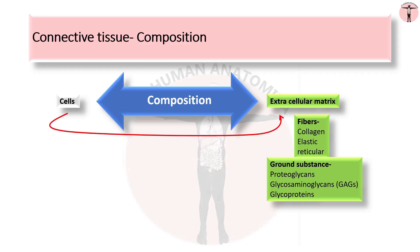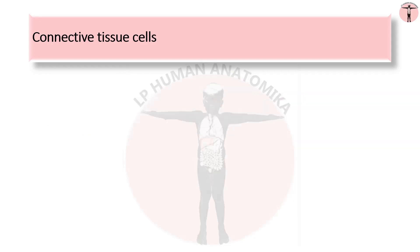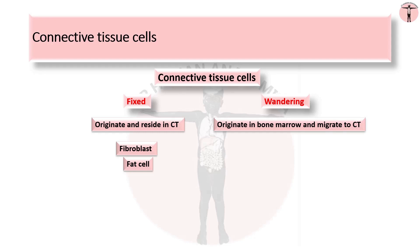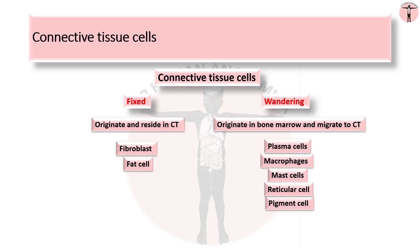The cells of connective tissue are widely separated from each other by the abundance of extracellular matrix. Connective tissue cells are classified into fixed and wandering cells. Fixed cells originate and reside in connective tissue; fibroblasts and fat cells are fixed cells. The wandering cells originate from bone marrow and migrate into the connective tissue. Wandering cells are plasma cells, macrophages, mast cells, reticular cells, pigment cells, and white blood cells which include neutrophils, eosinophils, basophils, lymphocytes and monocytes.